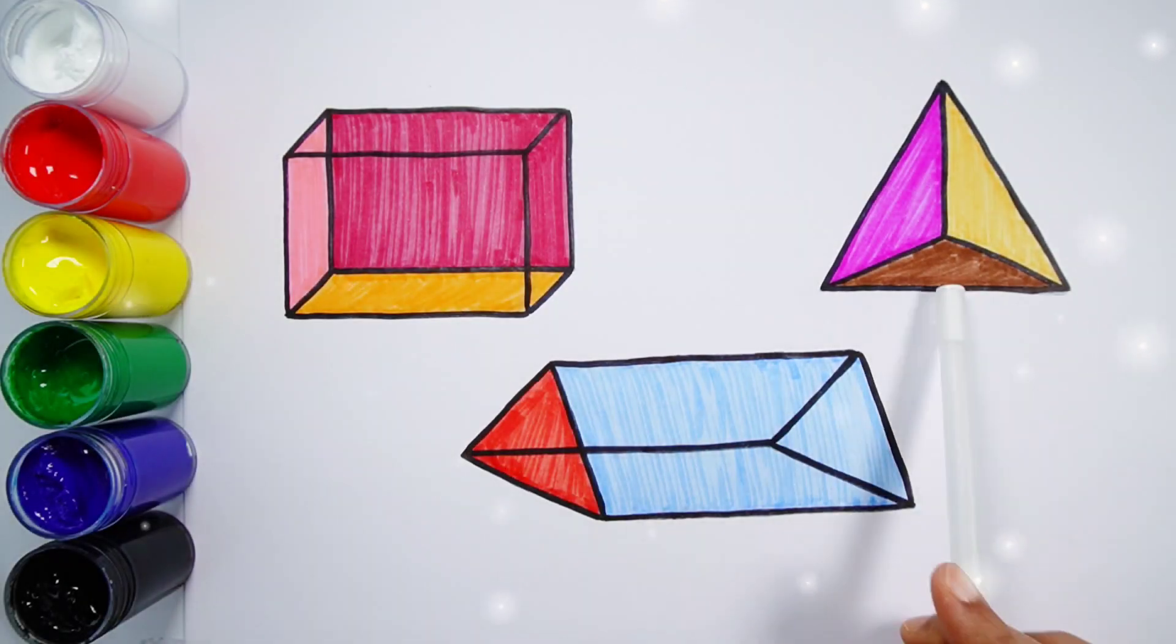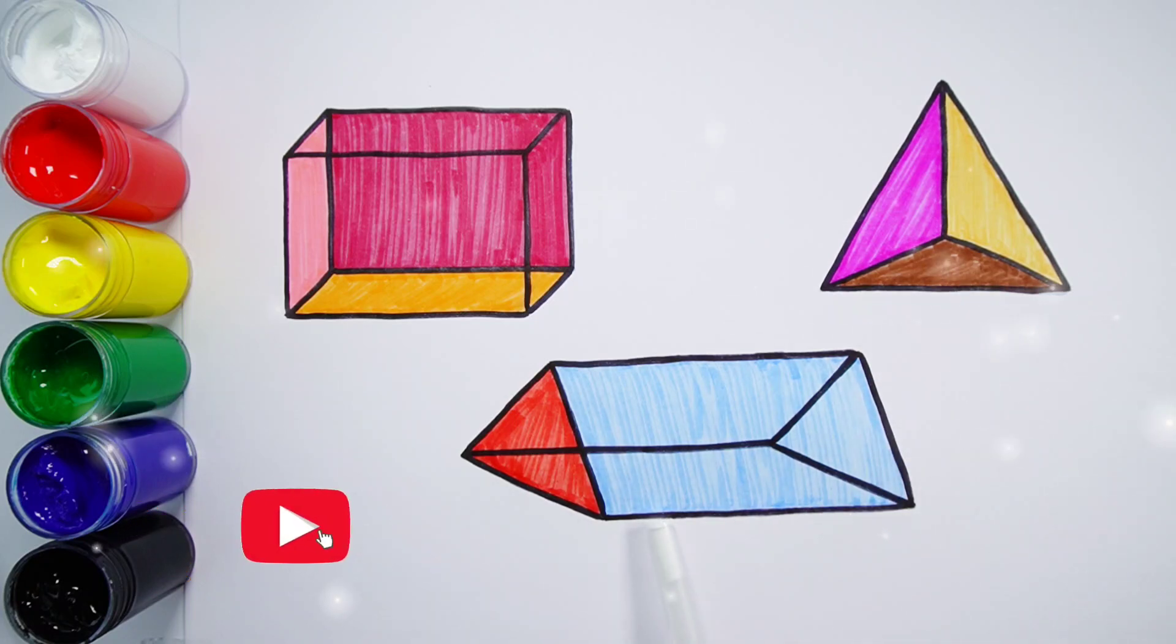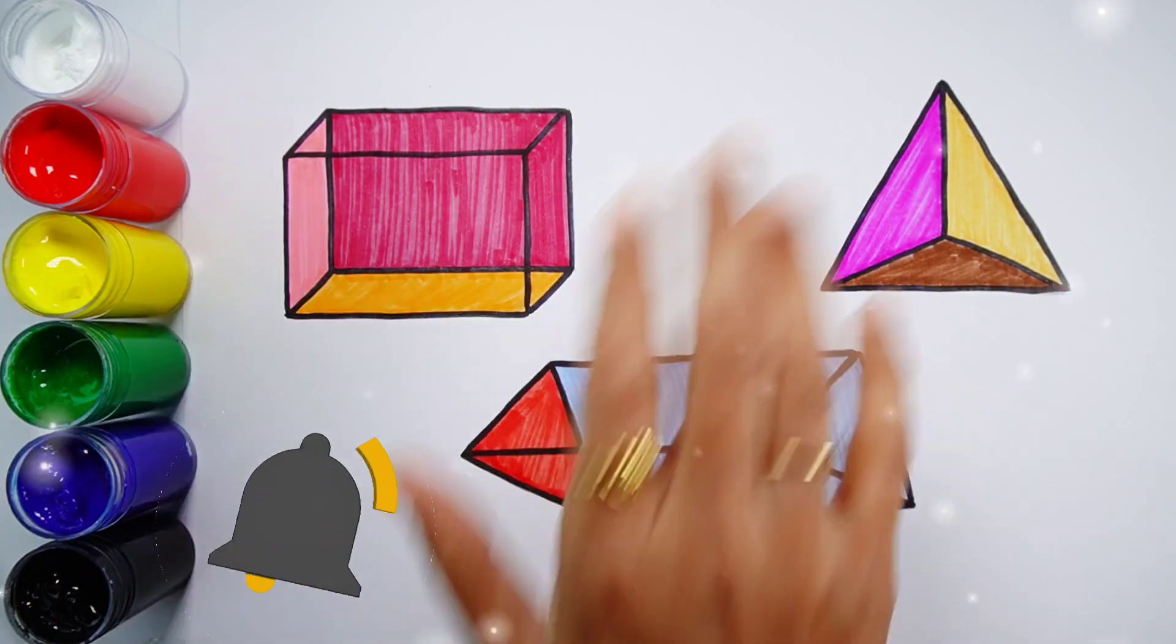A cuboid, a tetrahedron, a triangular prism. Thank you so much for watching. Don't forget to like and subscribe. See you next video, bye bye.